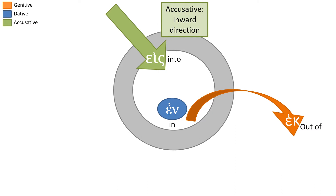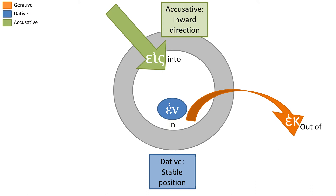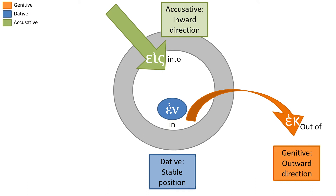The accusative is an inward direction — you want people you accuse to go into prison. En, dative, stable position — you want your dating life to be stable. En, ek, 'out of,' genitive — anything you generate, whether it's art, work, or children, comes out of you.